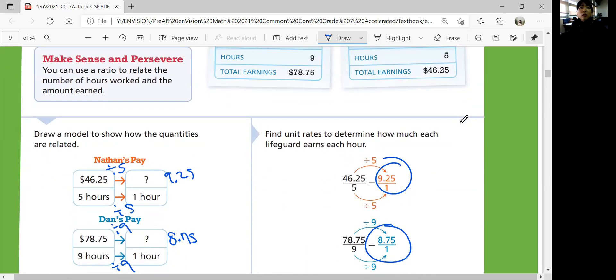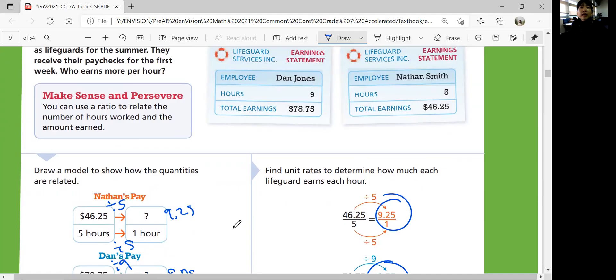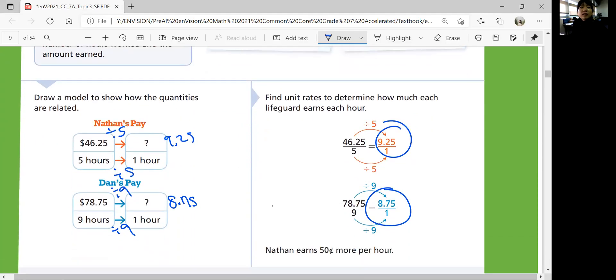Who earns more per hour? Wait, we got Nathan's first. I'm sorry, so that's Nathan's and this is Dan's. So Nathan earns about 50 cents more per hour. Maybe he has more training, that's why he earns a little bit more even if they're both lifeguards.